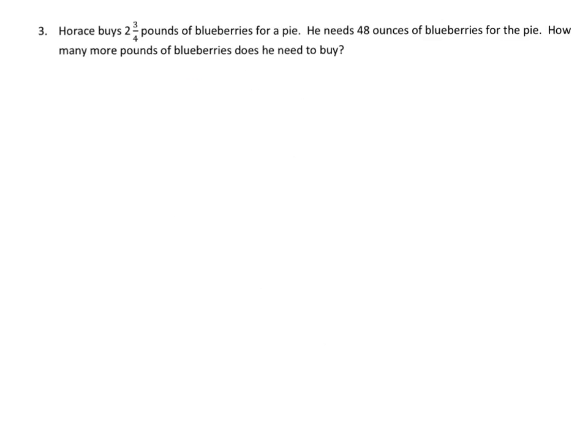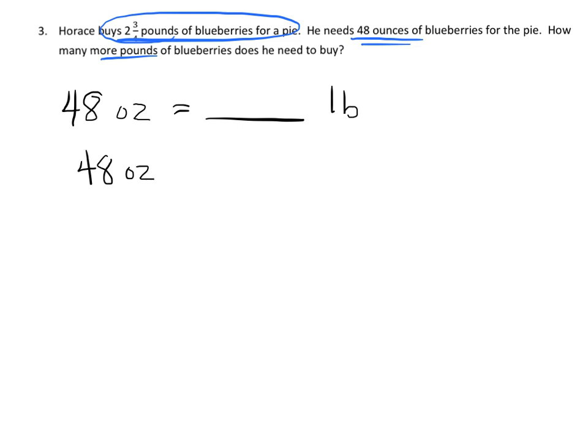And the last problem for this video. Horace, he buys 2 and three-quarters pounds of blueberries for a pie. He needs 48 ounces. So how many more pounds of blueberries does he need to buy? Man, there's a ton of different ways to solve this problem. I'm only going to show you one of those ways.